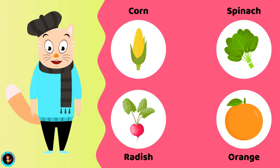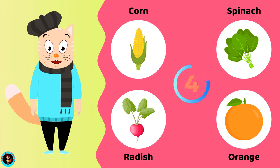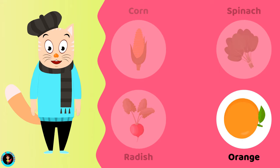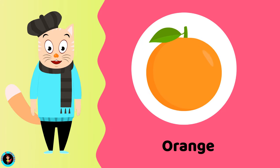Which among these is a fruit? Corn. Spinach. Radish. Orange. The right answer is Orange. Orange is a fruit.